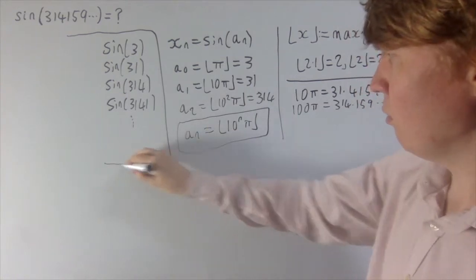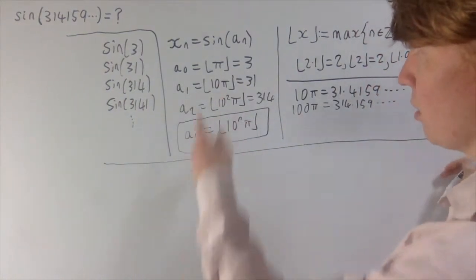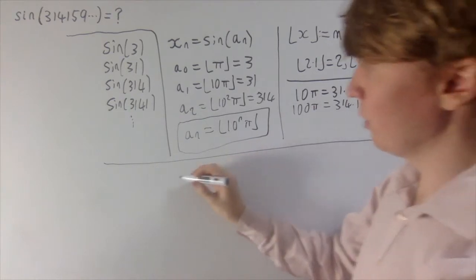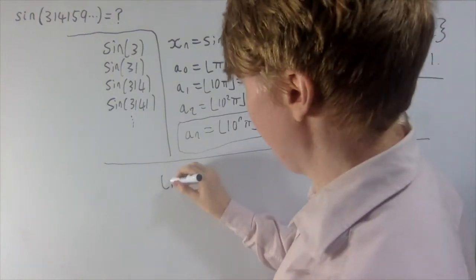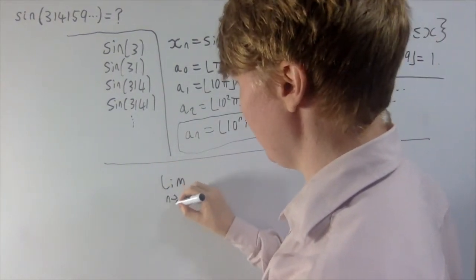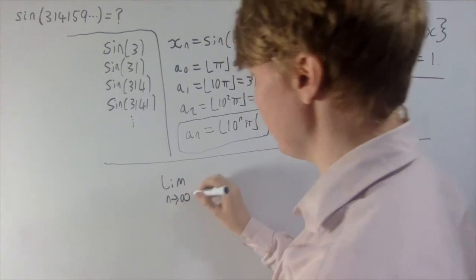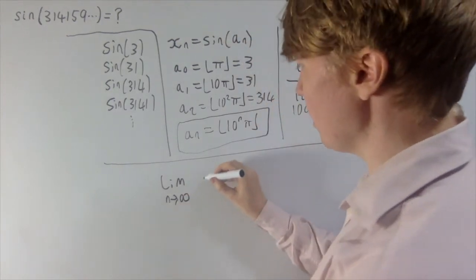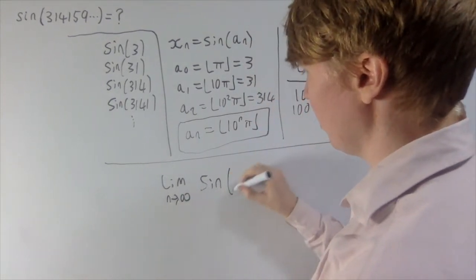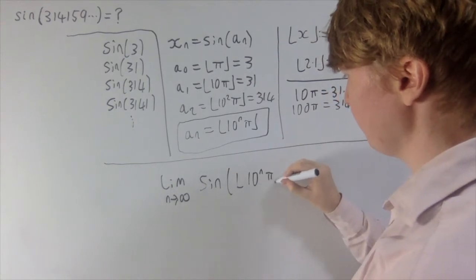Now we have a nice way of expressing the nth term, so we need to evaluate the limit as n goes to infinity of sin(floor(10ⁿ · π)). Does this limit exist, and if so, what does it equal?